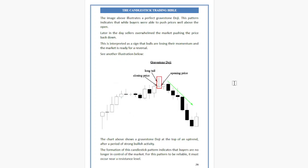The image illustrates a perfect Gravestone Doji. This pattern indicates that while buyers were able to push the price well above the open, later in the session sellers overwhelmed the market, pushing the price back down. This is interpreted as a sign that bulls are losing their momentum and the market is ready for a reversal.